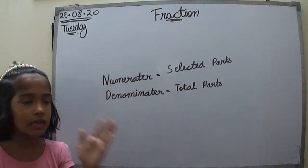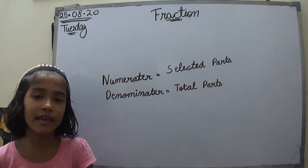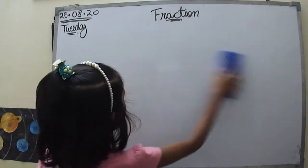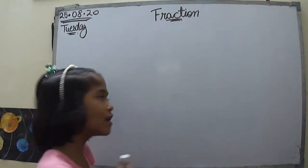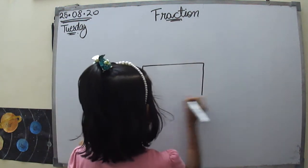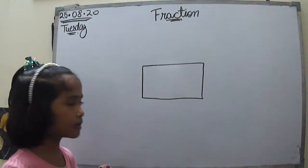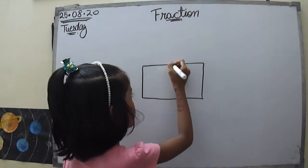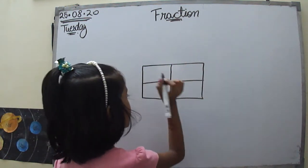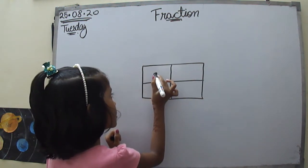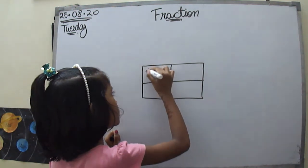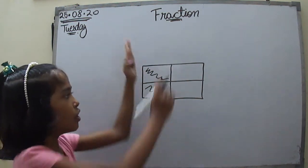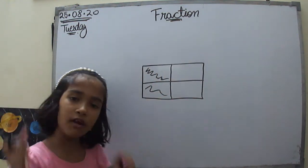Now I think you should be clear with the parts of a fraction. Let me tell you with an example. When you have a figure like a rectangle, and I cut this rectangle into four parts and select — shade — two of those parts, what is the fraction of this figure?